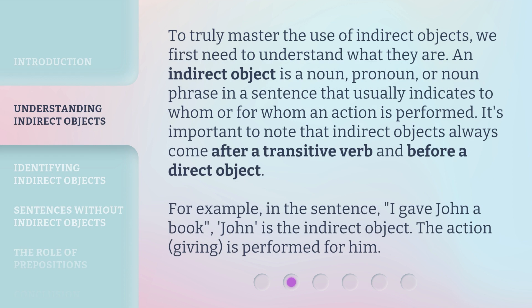To truly master the use of indirect objects, we first need to understand what they are. An indirect object is a noun, pronoun, or noun phrase in a sentence that usually indicates to whom or for whom an action is performed. It's important to note that indirect objects always come after a transitive verb and before a direct object. For example, in the sentence, 'I gave John a book,' John is the indirect object. The action — giving — is performed for him.